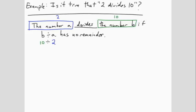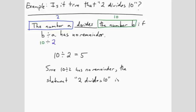So here's the question we need to ask: Does 10 divided by 2 have a remainder? In order to do this, we have to do the calculation. 10 divided by 2 is equal to 5. And since there is no remainder, it is in fact true that 2 divides 10. The final answer will include this explanation. Since 10 divided by 2 has no remainder, the statement 2 divides 10 is true.